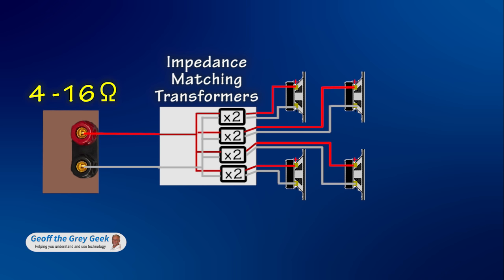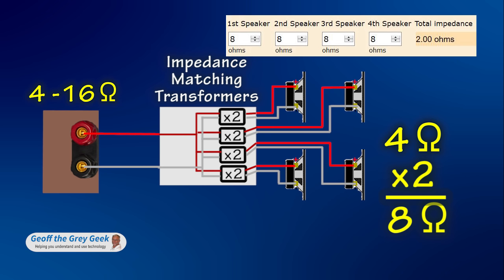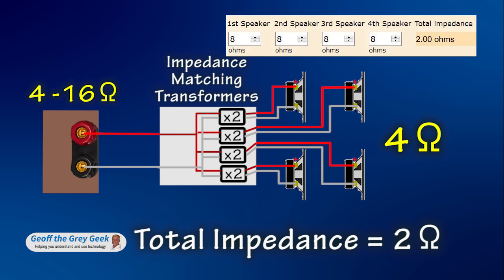However, if you have 4 ohms speakers and select times 2, then each speaker looks like 8 ohms. And the calculator tells us 4 8 ohms in parallel gives a total impedance of only 2 ohms. Not good.